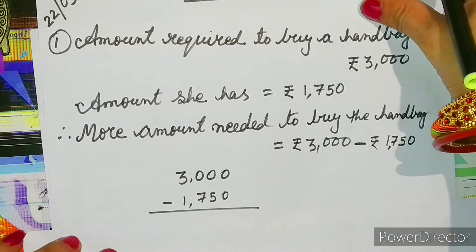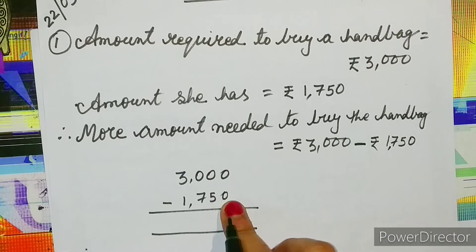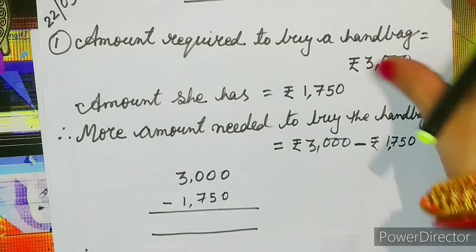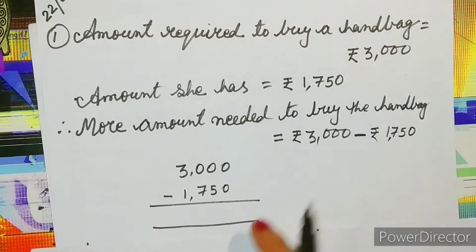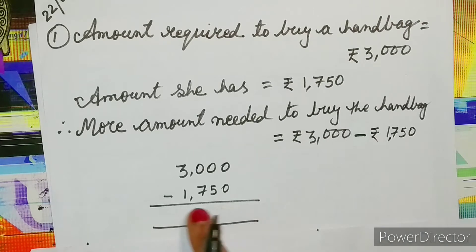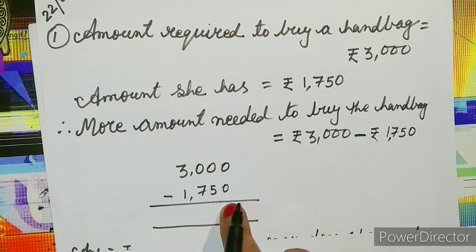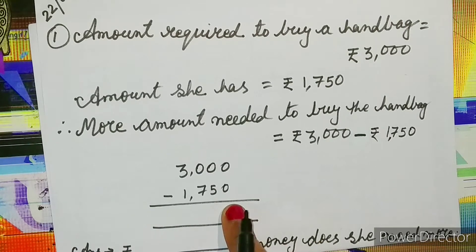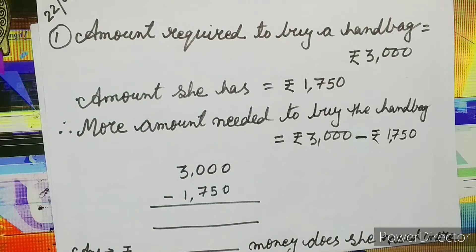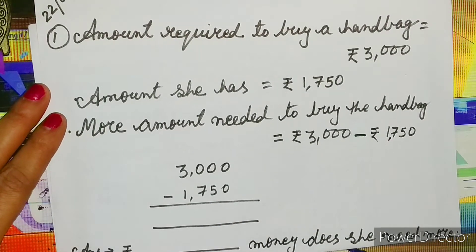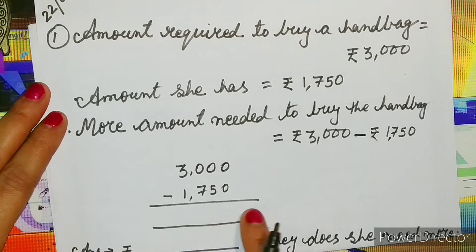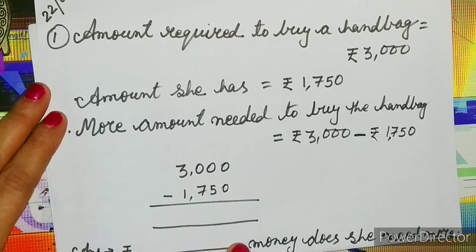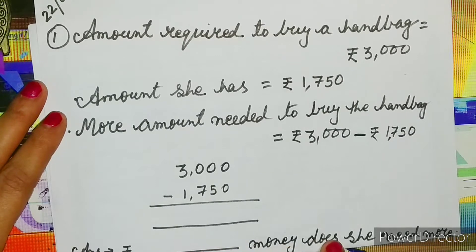Now we will subtract. This calculation portion, students, you have to do by yourself. After calculation, you will write the answer — rupees and whatever answer comes, the same answer you have to write in the blank space. After that you will write: money does she need more.